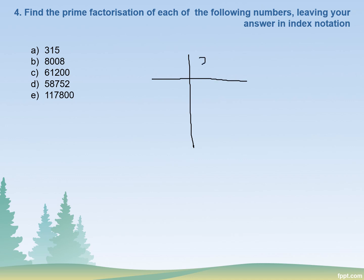We will solve it. The first question is 315. This is how you start the prime factorization — you write the number and start with the minimum prime number that divides it. The least prime number that divides 315 is 5, so we will start the division from 5. 5 times 63 is 315.